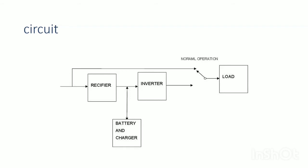Offline UPS systems normally operate in offline mode when the main supply is present. When a main supply failure occurs, the load transfers from the utility line to the UPS — that is why it is called offline UPS. The actual transfer time is very fast, though there is a transfer process involved.